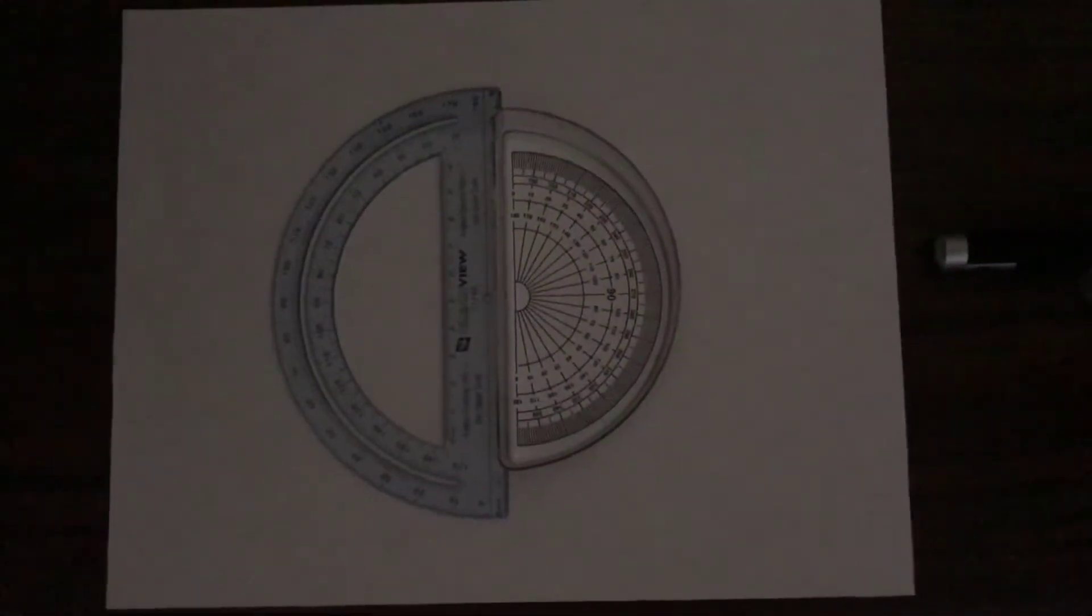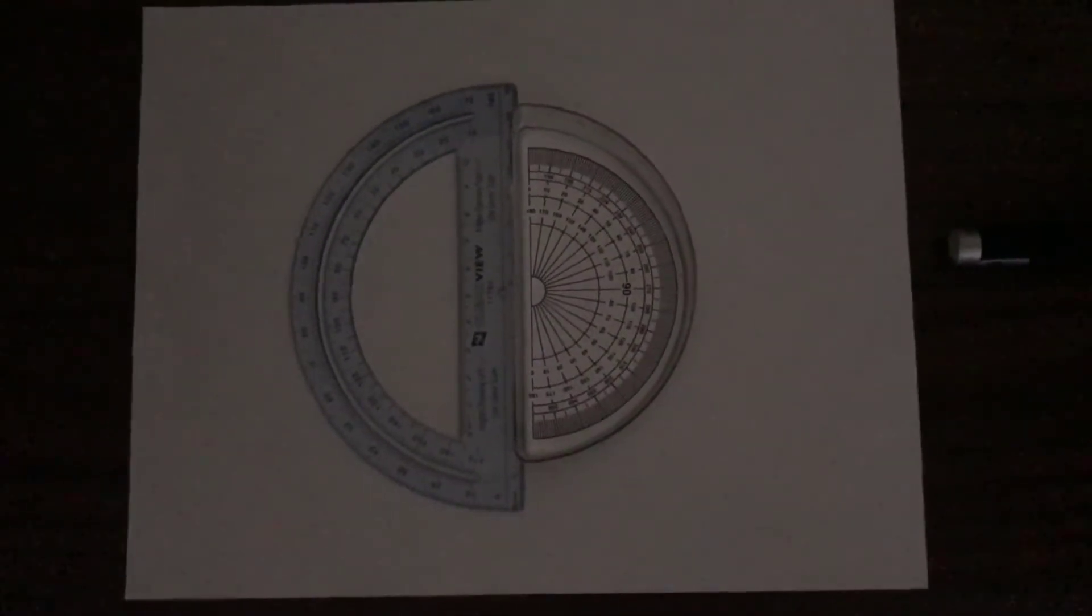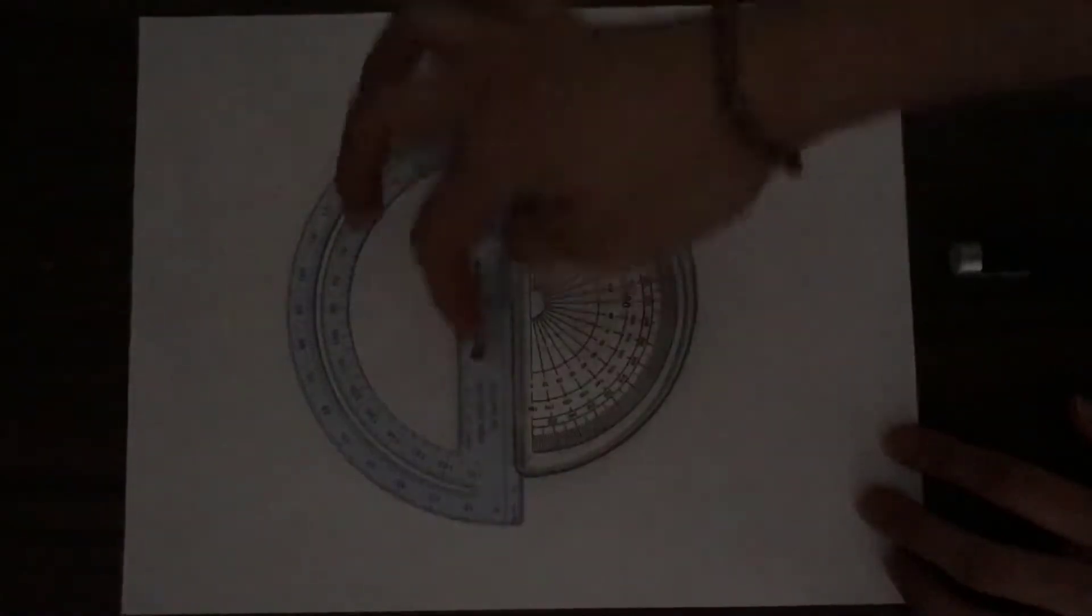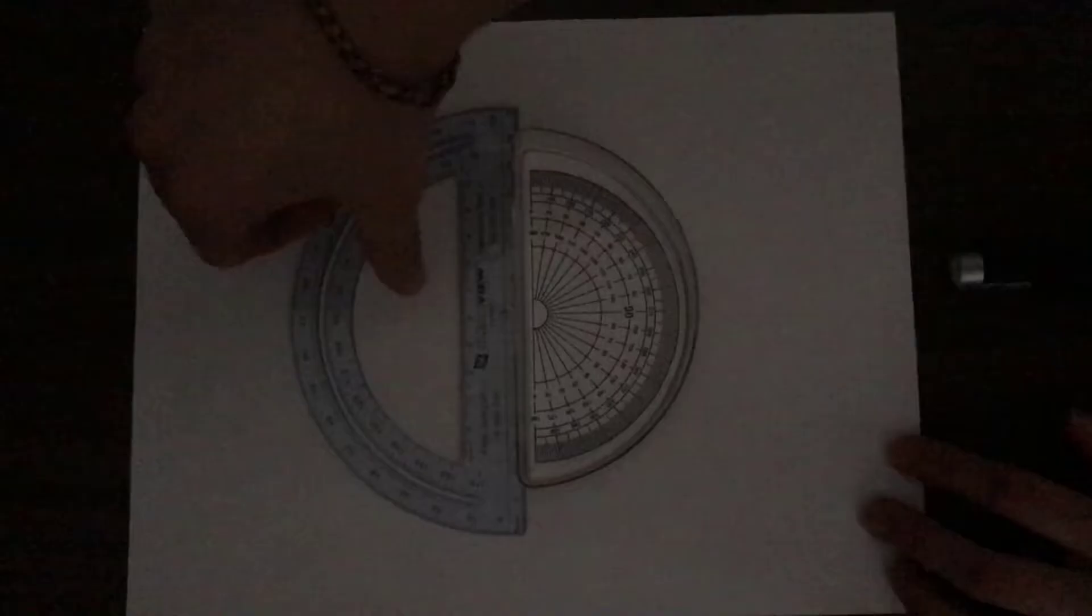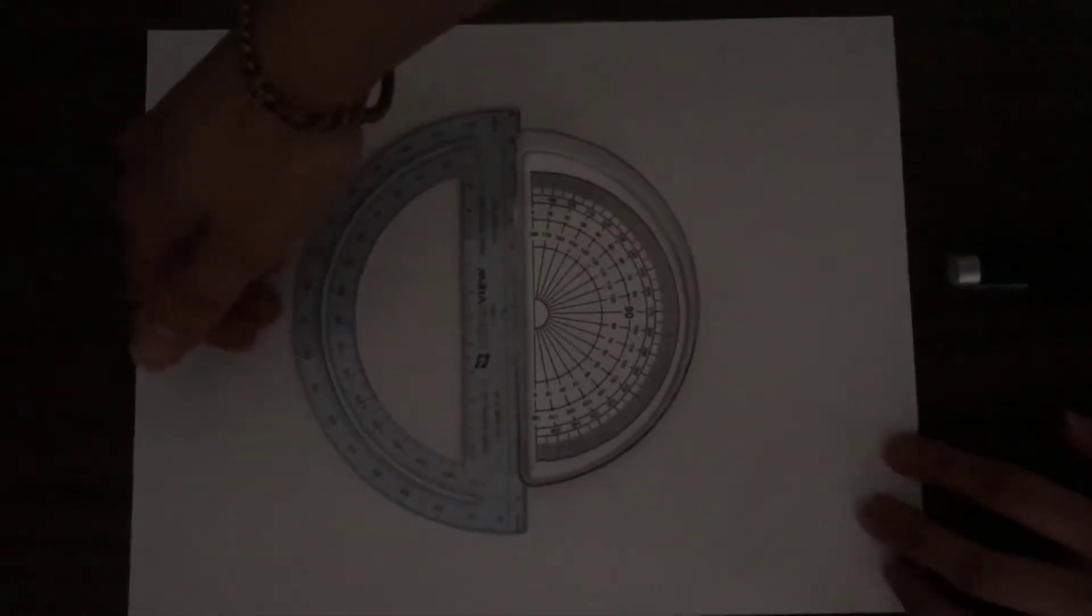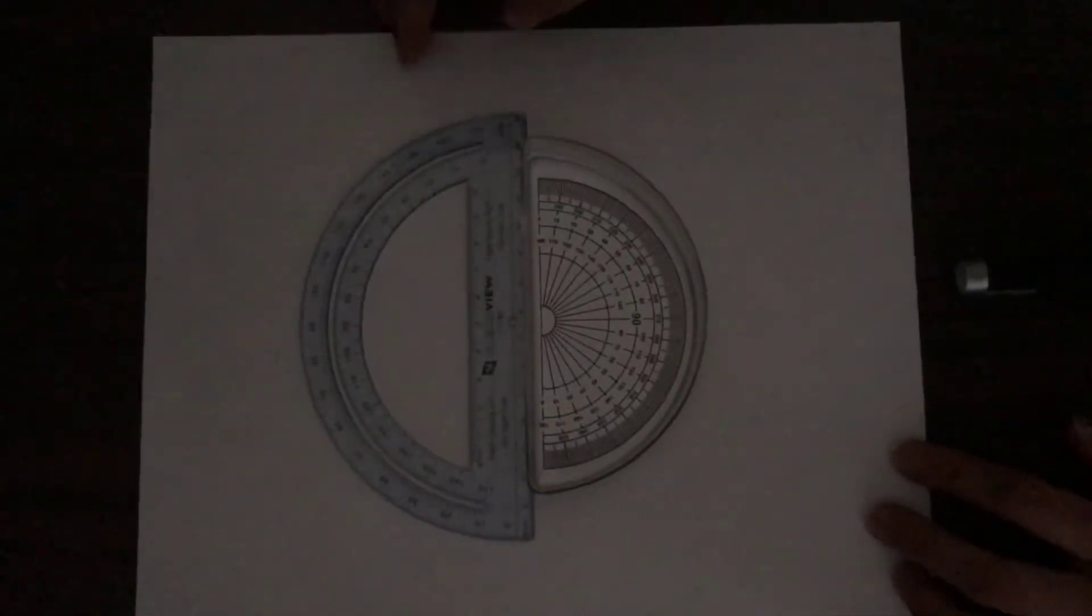So in this video we're going to show you how to do the first part of the experiment. For this setup you want the flat end of the semicircular cup to be even and flush against the flat end of the protractor.